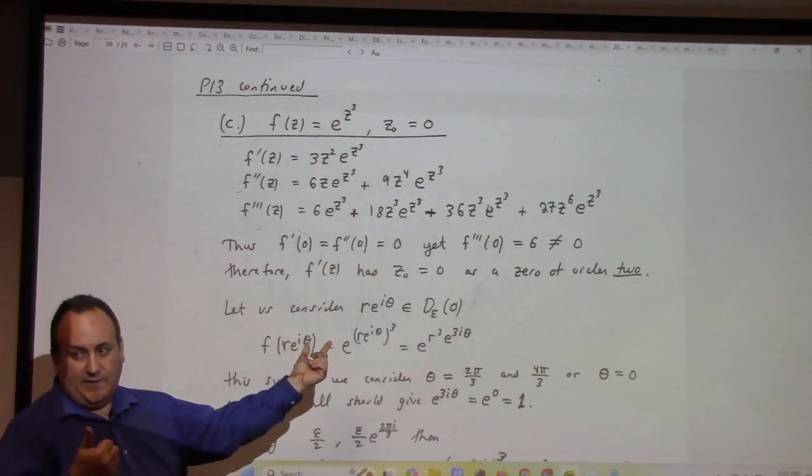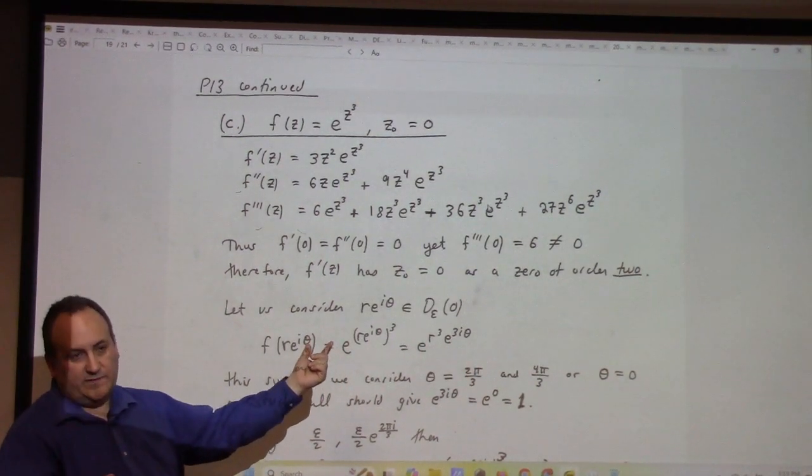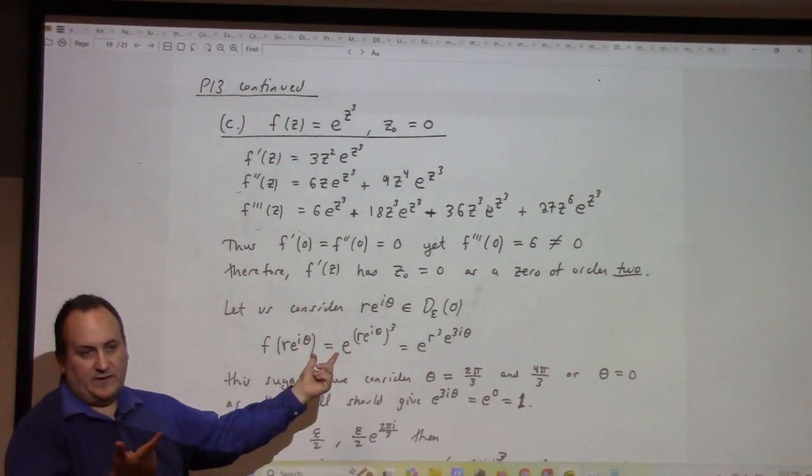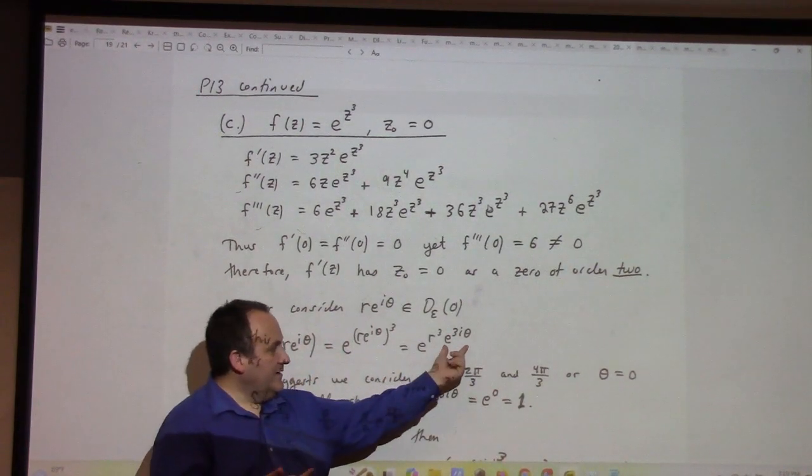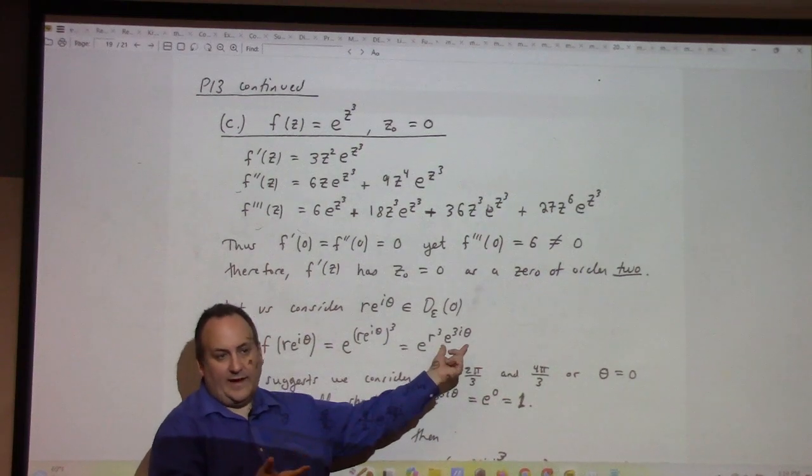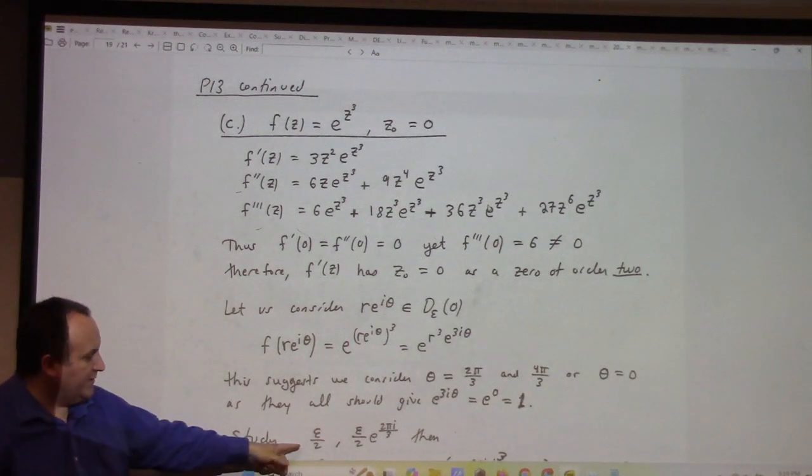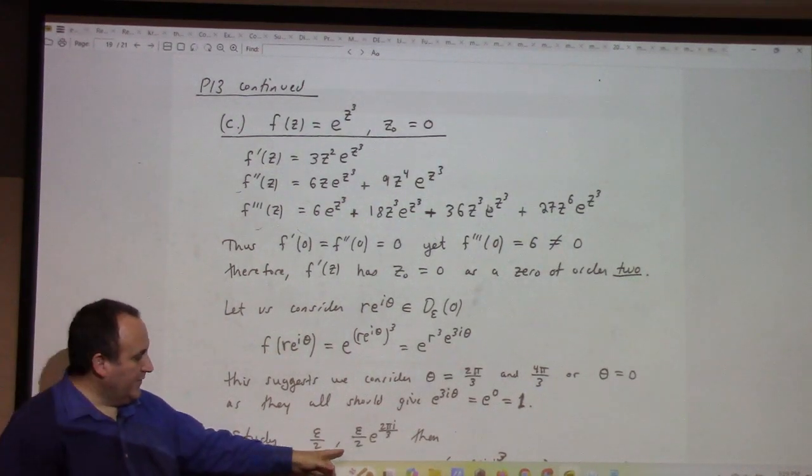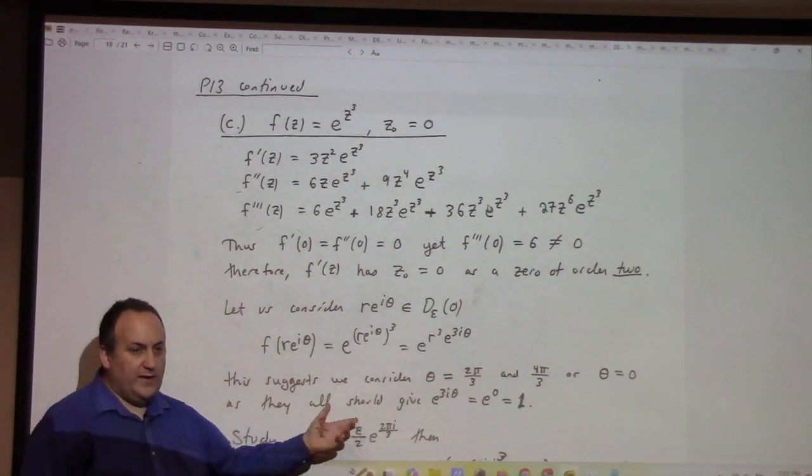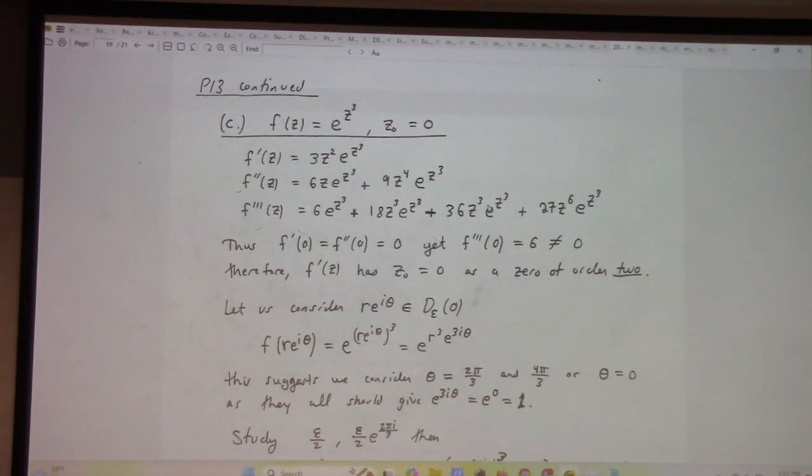Easy way to do that, put theta equal to 0, or put theta equal to 2 pi over 3. If I put theta equal to 2 pi over 3, e to the 3i theta is also e to the 2 pi i. E to the 0, e to the 2 pi i both give me 1. So if I look at epsilon over 2, which is theta 0, or if I look at epsilon over 2 times e to the 2 pi over 3, those both map to the same output, even though they're distinct inputs, which shows me that the mapping is not 1 to 1.